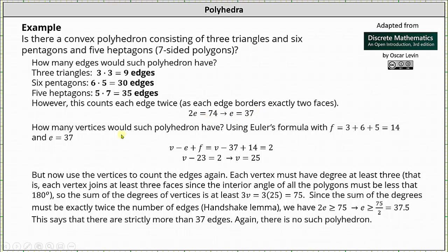Well, how many vertices would such polyhedron have? Using Euler's formula, f = 3 + 6 + 5 = 14, because the possible faces are 3 triangles, 6 pentagons, and 5 heptagons. And we also know e = 37. Applying Euler's formula, we have v - 37 + 14 = 2. Solving for v, we have v = 25.